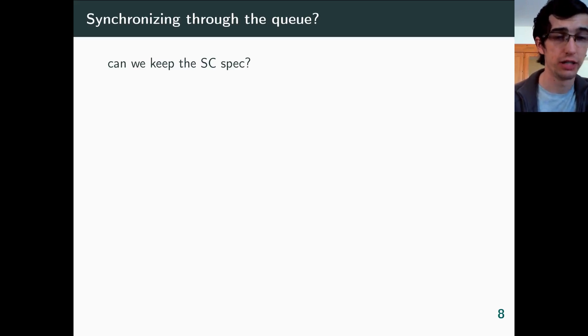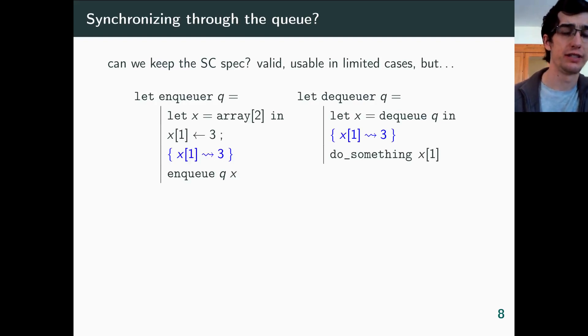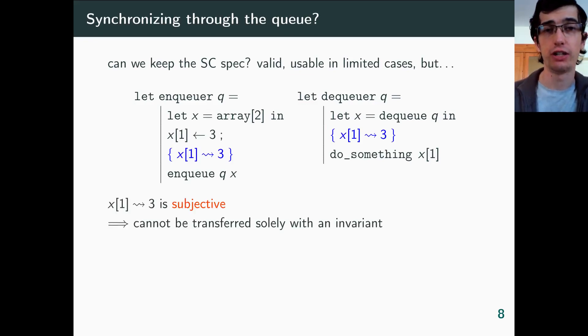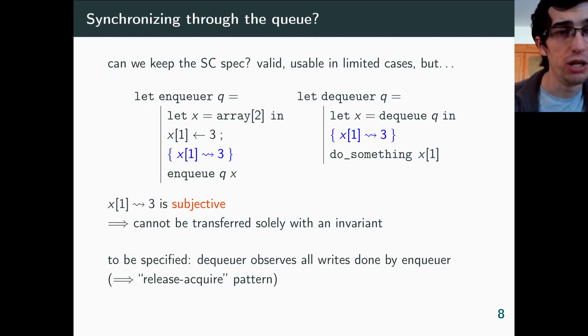Let's consider an example. Thread A writes to some memory region, but then enqueues a pointer to that region. Thread B dequeues the pointer. Now thread B expects to read the memory region in the state in which A has left it. But remember that we are in weak memory, so it's not because A knows it has written 3 to x[1], that B knows it too. So we want the queue to guarantee that when dequeuing, B learns about all writes known by A, which is a typical release-acquire pattern. This is a side effect that we need, so it must be specified.